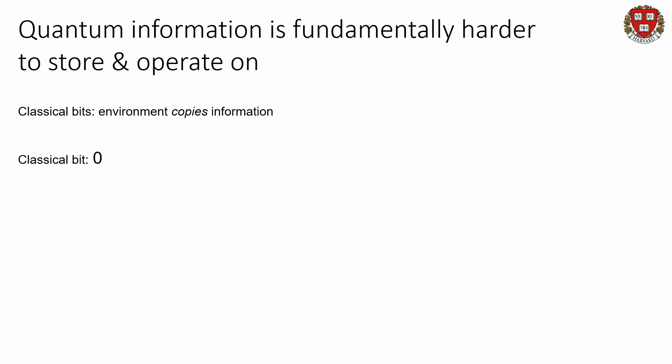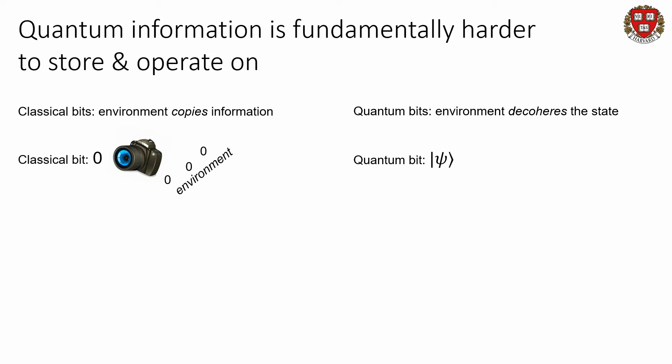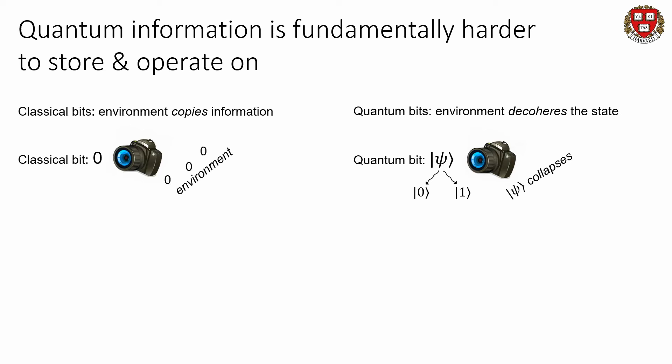If I have some classical bit zero and I put it on this table, we can all take pictures of it and agree that it's in state zero. Through interaction with the environment, this classical bit becomes stabilized — it gets copied in more places. But when we have a quantum bit in some state psi and we measure it and take pictures of it, it will probabilistically jump into qubit state zero or one, collapsing the wave function and causing decoherence. Quantum information is intrinsically destabilized by interaction with the environment.